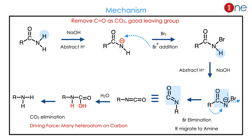What is the mechanism behind it? It involves removal of the group as CO2. The first step is proton abstraction by base, giving anion formation. The anion is then quenched by a bromine cation. The next hydrogen is also abstracted by base, giving another anion, and the leaving group causes the R group to migrate and push bromine out, forming isocyanate.